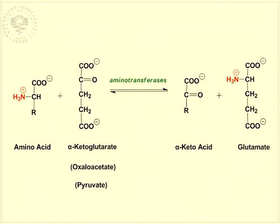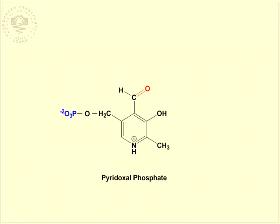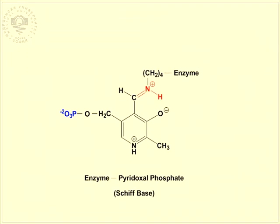The enzymes that catalyze transamination are called aminotransferases or transaminases. Their coenzyme is pyridoxal phosphate, or PLP. Pyridoxal phosphate is a derivative of pyridoxine or vitamin B6. The coenzyme is covalently attached to the enzyme via a Schiff base. The link is formed by the condensation of its aldehyde group with the epsilon amino group of an enzyme lysine residue.